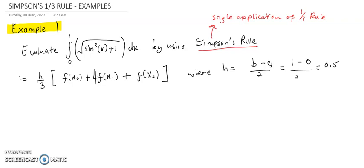Before you use this formula, you need to identify what is x0, x1, and x2. So x0 is the lower limit of the integral, which is 0. The interval increases by 0.5, so x1 is 0 plus 0.5, which is 0.5. And x2 is the upper limit of the integral, so x2 is 1.